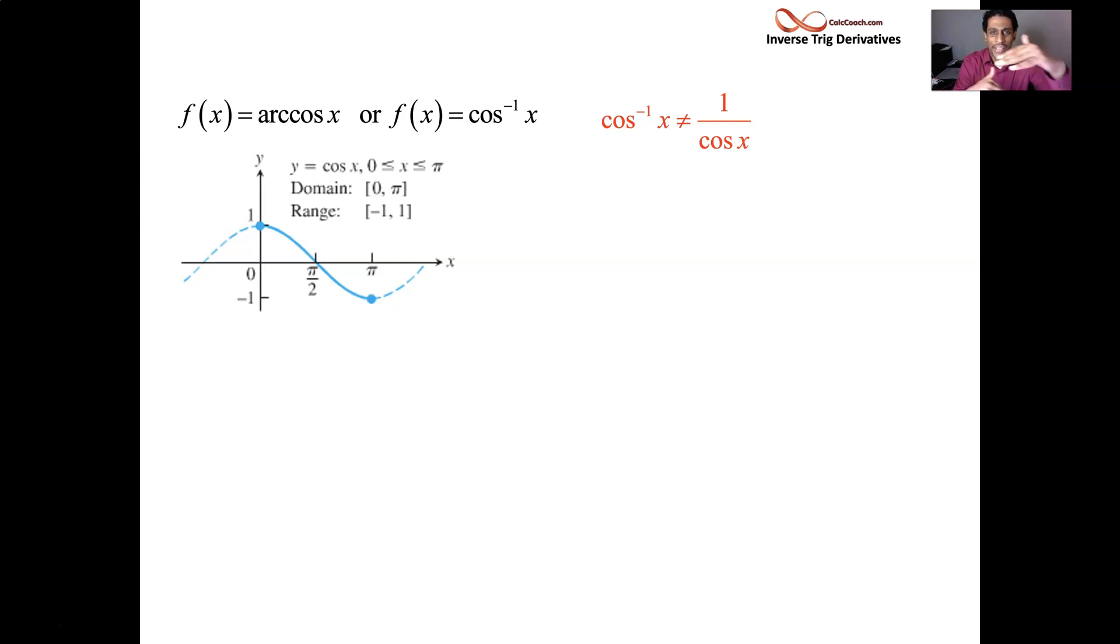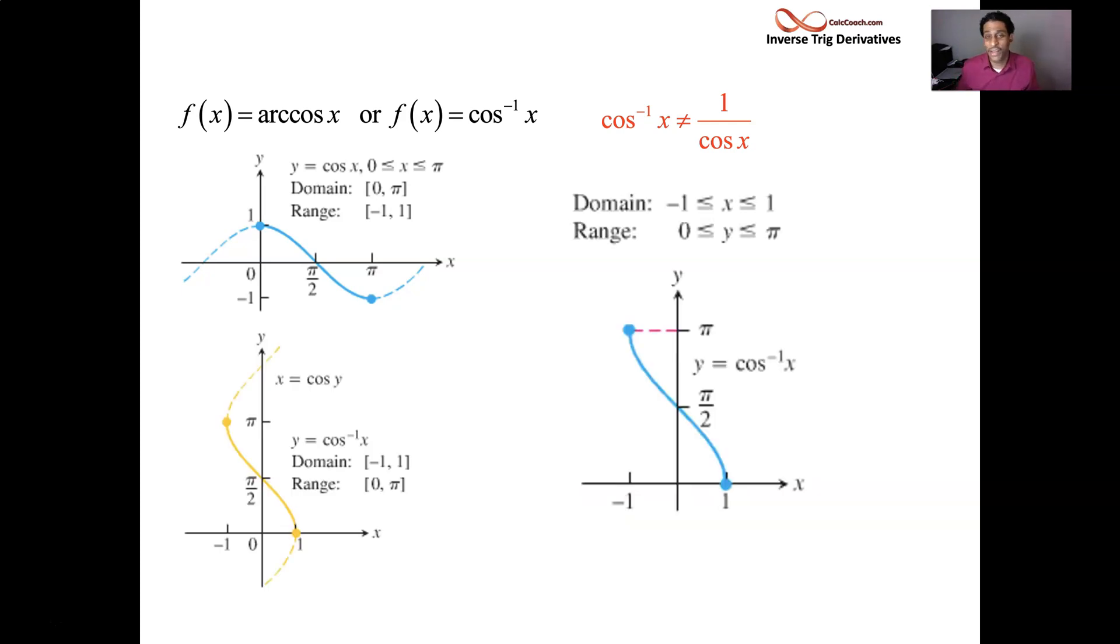And so that window of 0 to pi and minus 1 to 1, that window will make the function invertible. And then we can switch the domain and switch the range where the input values are going to be the actual negative 1 to 1. And the output values are going to be those angles. So the graph will be reflected about the line y equals x. And it will look like that. That's the graph of arc cosine.